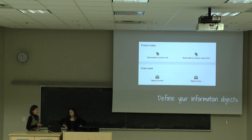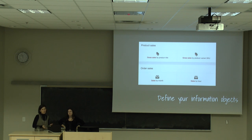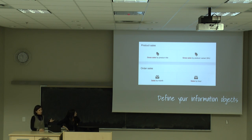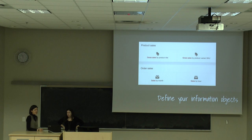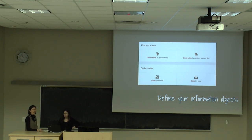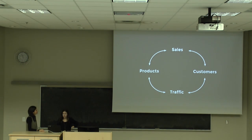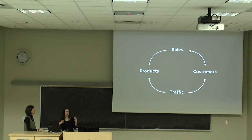We also looked at what information objects were shared across different reports and how we were referring to them. For example, in our product sales reports were we using the term 'gross sales,' and in our order sales report were we using the term 'sales'? Were these the same numbers or actually different, requiring distinct names? It turned out they were the same and we were just using different names.